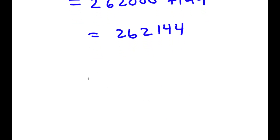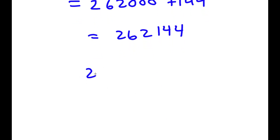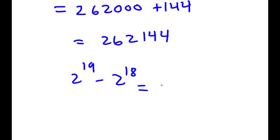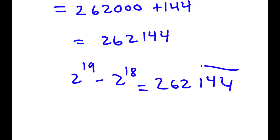Meaning 2 to the power of 19 minus 2 to the power of 18 is equal to 262,144.